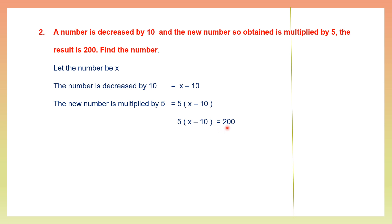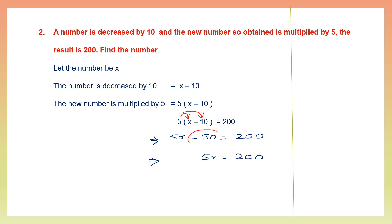Now we have to solve for x. When you multiply 5 into x minus 10: 5 into x is 5x, and 5 into minus 10 is minus 50, equal to 200. To find the value of 5x, we take this minus 50 from the left hand side and transpose it to the right hand side, so that becomes plus 50. So 5x is equal to 200 plus 50, which is 250.